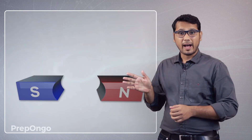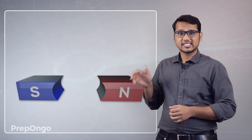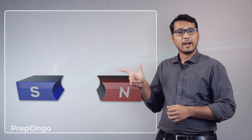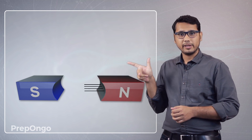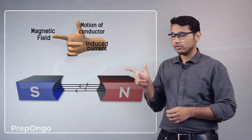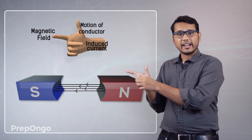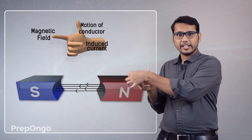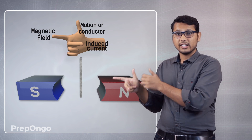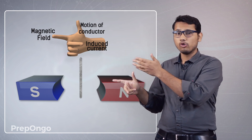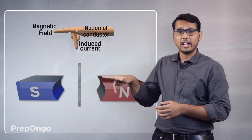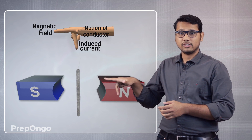Now this is the magnet — its north pole is here and south pole is there. So the magnetic field will go in this direction; it is always from north to south. The conductor is moving outwards, so I will have to position my hand accordingly.